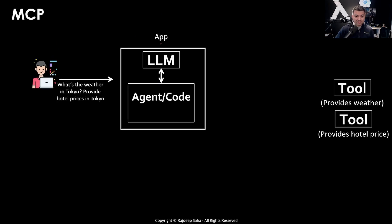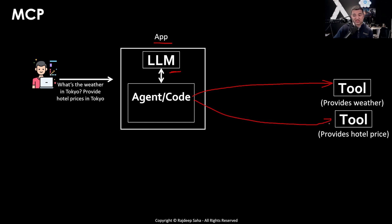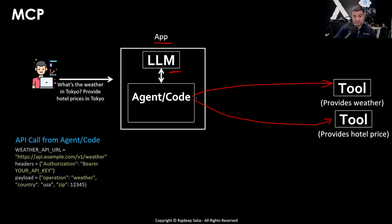The first thing is MCP. Let's say you have an application running some large language model, and you have some agent or code, and you ask this application: what's the weather in Tokyo and provide hotel prices in Tokyo? This LLM has no idea about the latest weather in Tokyo or the latest hotel prices. So there will be some agent or code which needs to connect to external tools — maybe weather.com or other APIs — and similar tools for hotel prices. Each of these tools will have a different API URL, different payload, etc. There is no dynamic discovery per se. This is how MCP, or Model Context Protocol, was born.